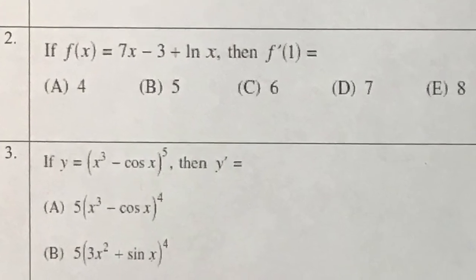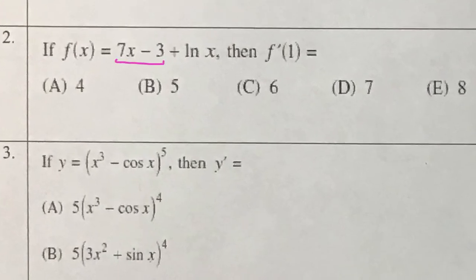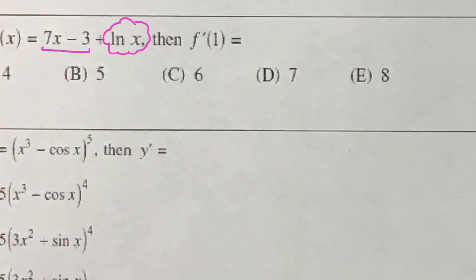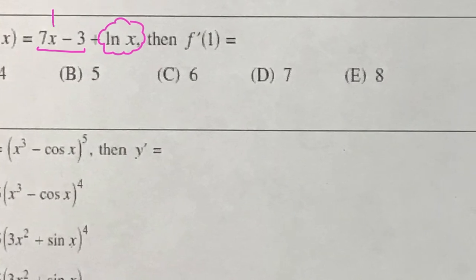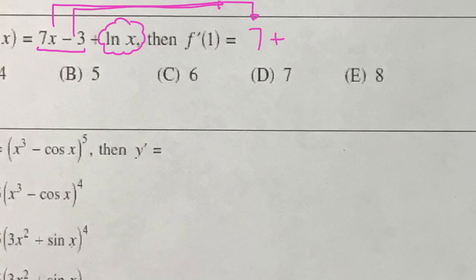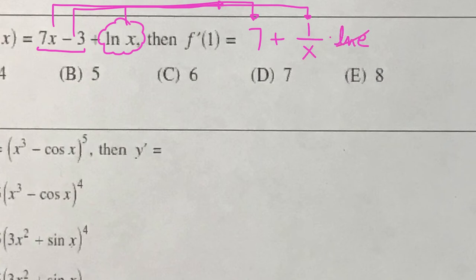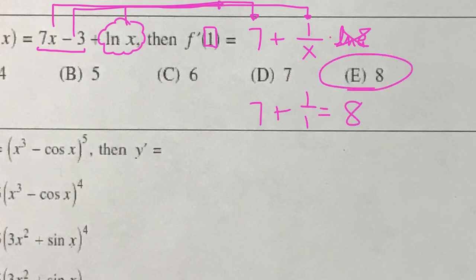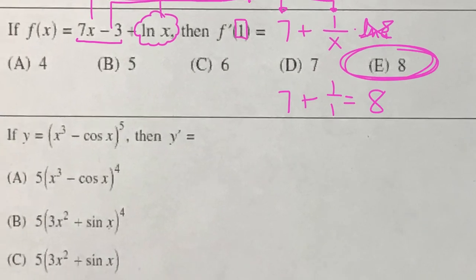Here we have another function with a linear aspect and a natural log aspect. Taking the derivative piece by piece: the derivative of 7x is 7, the derivative of negative 3 is 0, and the derivative of natural log of x is 1 over x times the natural log of e, which is 1, so it contributes 1 over x. Plugging in x equals 1 gives us 7 plus 1 over 1, which is 8. The answer to the second question is E, 8.